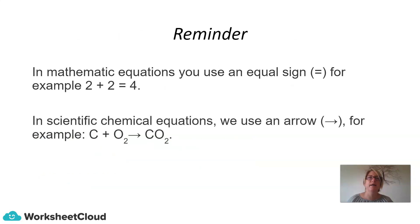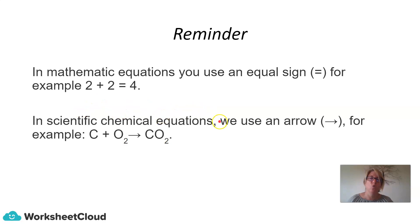A reminder: in mathematics equations you use an equal sign — for example, 2 + 2 = 4. What's very important is that in scientific equations, we use an arrow; we do not use an equal sign. For example: C + O2 → CO2, where the arrow indicates the reaction and produces CO2.